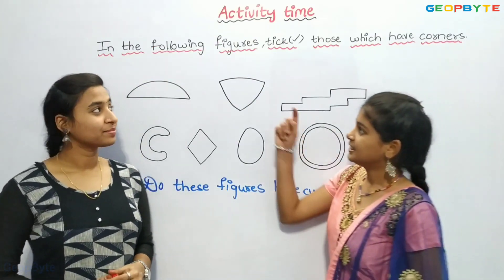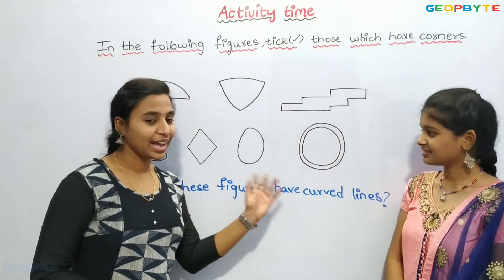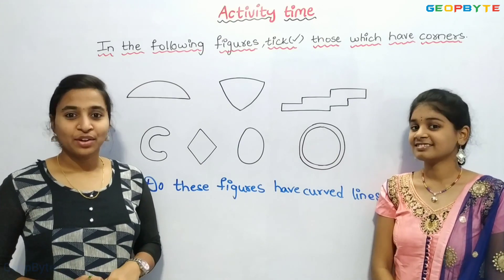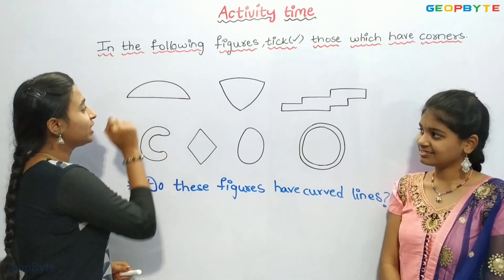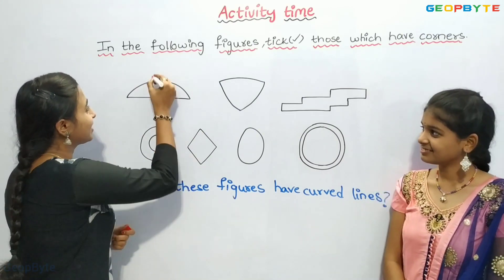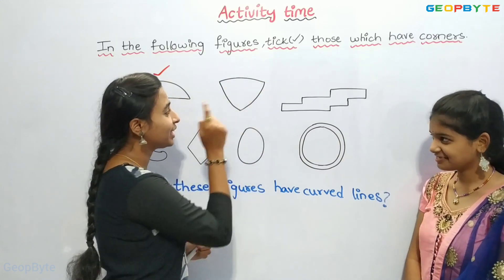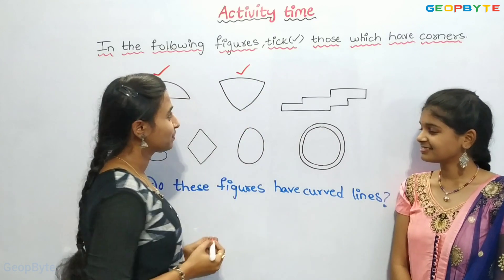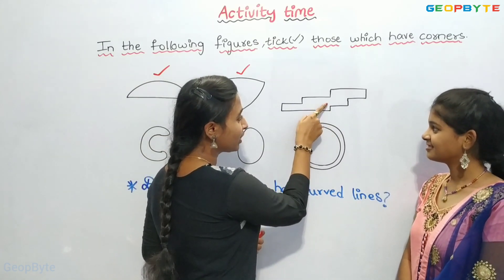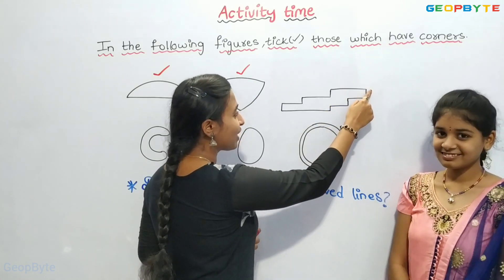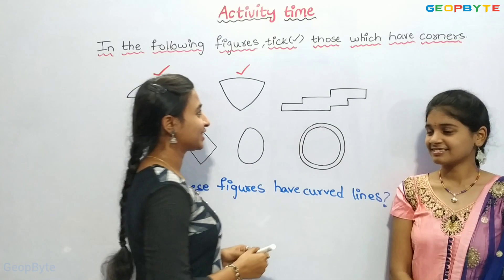Hey kids, see here. In the following figures, take those which have corners. The first figure has two corners — let us take it. The second figure has three corners — let us take it. The third figure has twelve corners — let us take it.